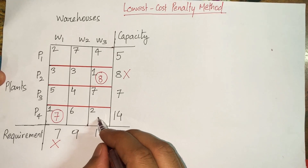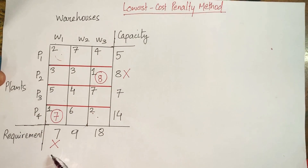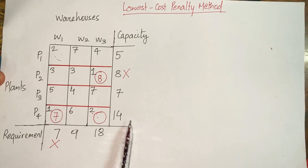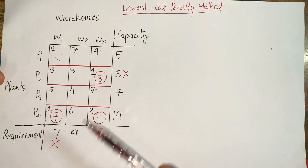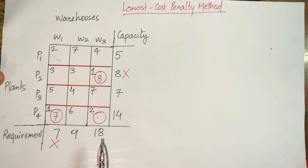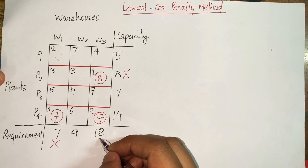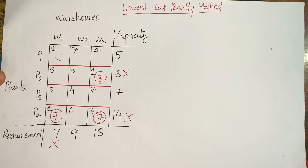Searching again for the minimum cost cell, I find cost 2 in two locations. Since warehouse W1 is already satisfied, I select the remaining cost-2 cell. Plant P4 had 14 units, 7 already given to W1, so it has 7 left. Warehouse W3 needs 18 units total; 8 were already shipped, so it requires 10 more. Since P4 only has 7 left, all 7 are allocated to W3.